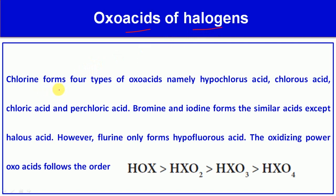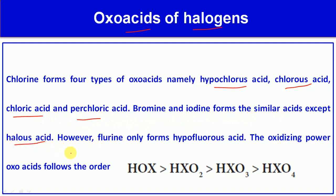Chlorine forms four types of oxoacids: hypochlorous acid, chlorous acid, chloric acid, and perchloric acid. Bromine and iodine form similar acids, except the halous acid.